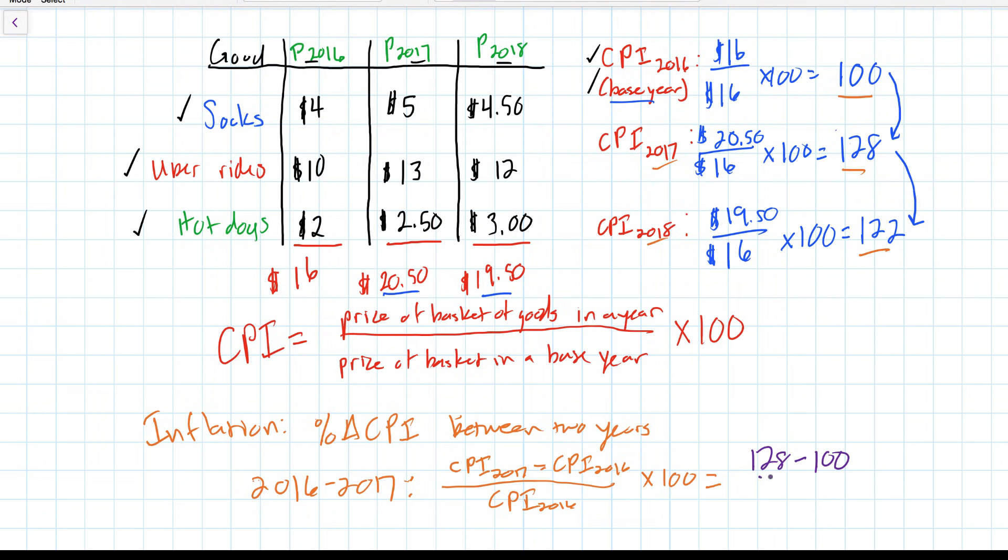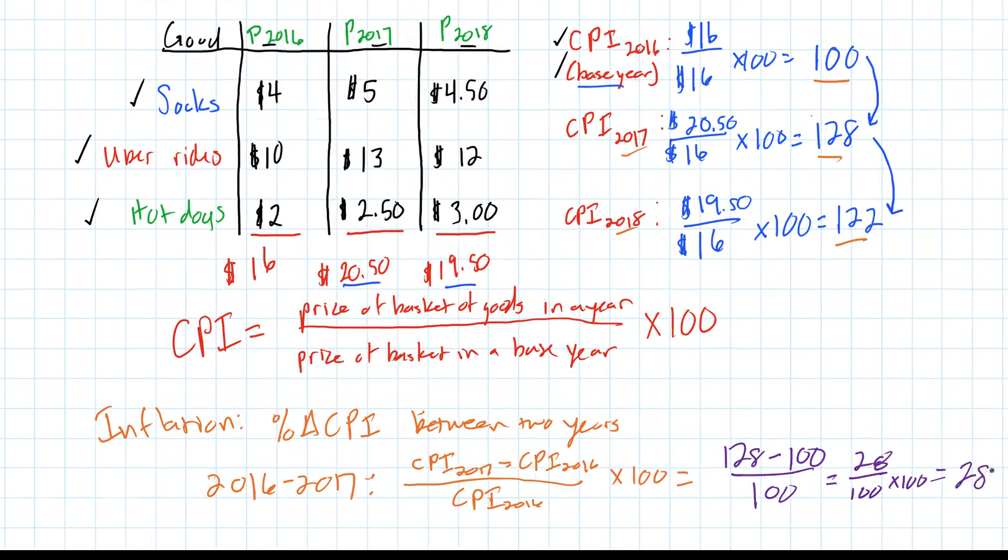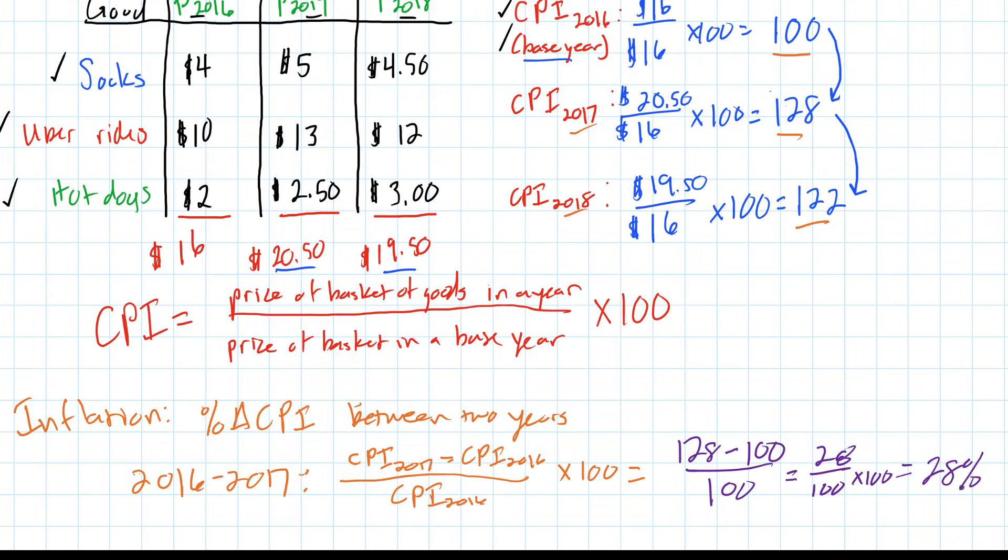The CPI for 2016, our base year, was 100, and we can divide that by the base year CPI of 100, and we get 28 divided by 100 times 100, which gives us an inflation rate of 28%. Prices increased on average across this country by 28% between 2016 and 2017.